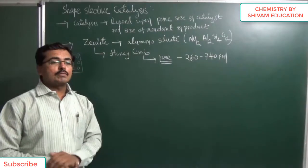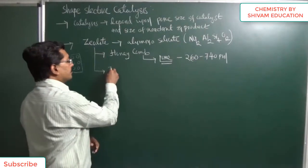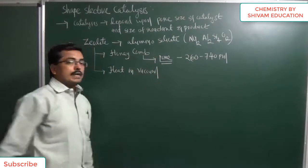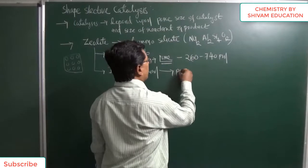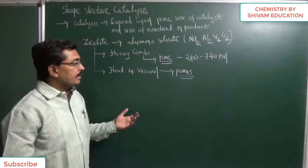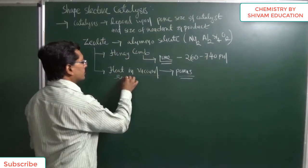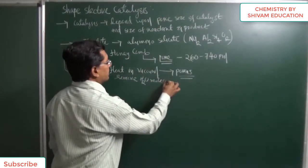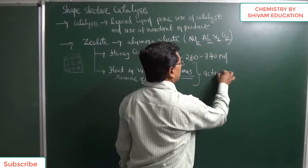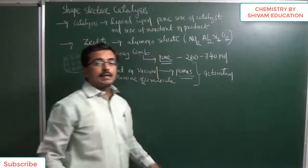Therefore it is considered a shape selective catalyst. Now, before using zeolite, we have to heat it in a vacuum. When we heat it in a vacuum, it becomes porous and the water molecules adsorbed on its surface are eliminated, making it totally porous. This removes moisture molecules. This process of heating in a vacuum is known as the activation of zeolite. So zeolite must be activated before use.